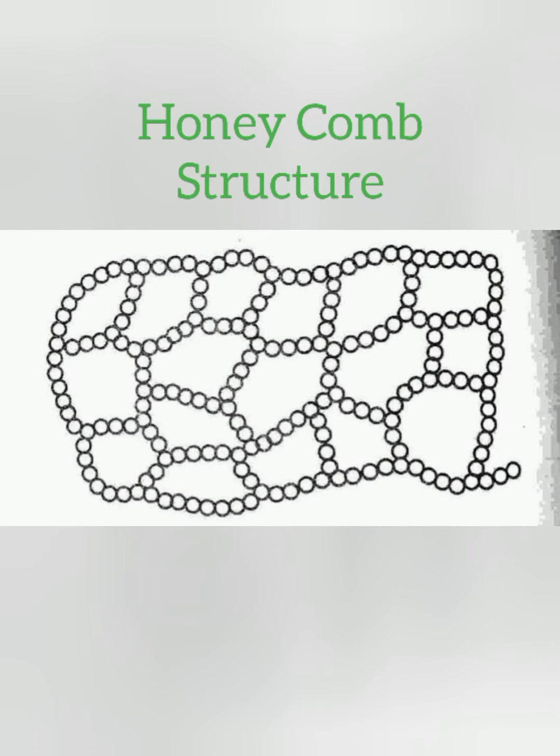Honeycombed structure. From the figure we observe the voids in the structure. Honeycomb structure is sensitive to vibrations — volume decreases due to vibrations. It is also collapsible in nature; volume decreases due to saturation, similar to dough (atta) from daily life. Examples of honeycomb structure are fine sand and silt.